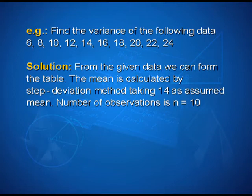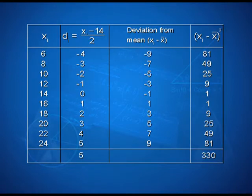Look at the solution. From the given data, we can form the table. The mean is calculated by the step deviation method, taking 14 as the assumed mean. Here, the number of observations is n equal to 10. The first column represents xi. The second column shows the deviations calculated as xi minus 14 upon 2. We have the values minus 4, minus 3, minus 2, minus 1 and so on, and we calculate the sum also as 5.